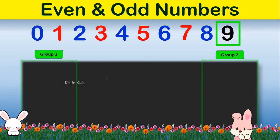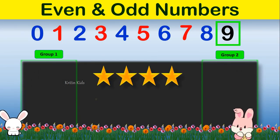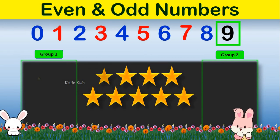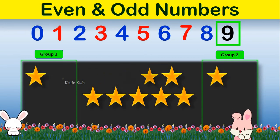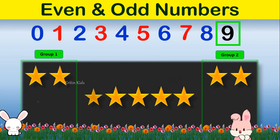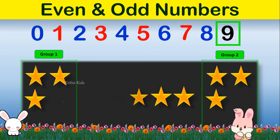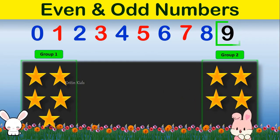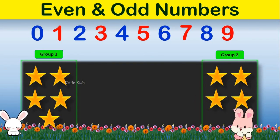Next we have number 9. Let us divide this between 2 groups. You can see that both the groups have different number of items. So we can say number 9 is an odd number.